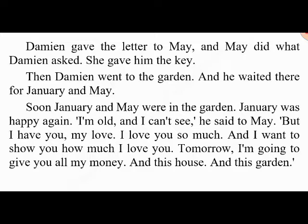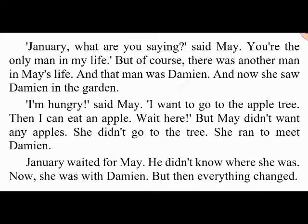Soon January and May were in the garden. January was happy: 'I'm old and I can't see,' he said to May, 'but I have you, my love. I love you so much and I want to show you — tomorrow I'm going to give you all my money, this house, and this garden.' 'January, what are you saying?' said May. 'You're the only man in my life.' But of course there was another man in May's life — Damien — and now she saw him in the garden.